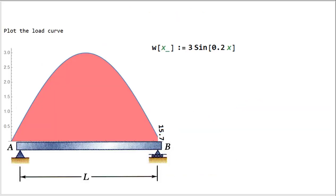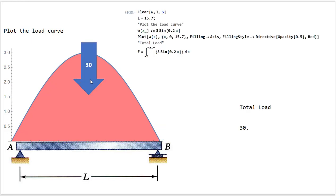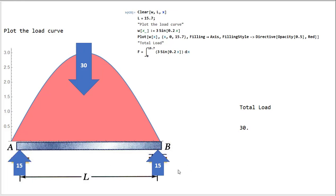For the homework, I gave you another nice symmetrical scenario so you don't have to do anything strange to figure out what's happening at the support. This example uses a sine curve. You can find the area under the curve to get your total load — I integrated that load curve from zero all the way to the other side, and the equivalent concentrated load for this one is 30. Since it's symmetrical, half on each side. If it wasn't symmetrical, you'd go through a center of mass calculation.